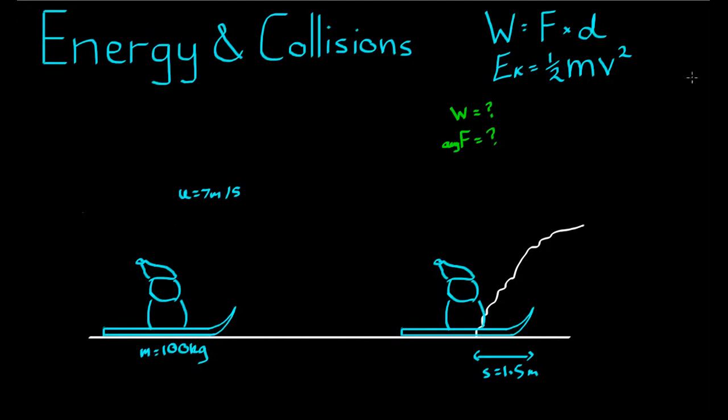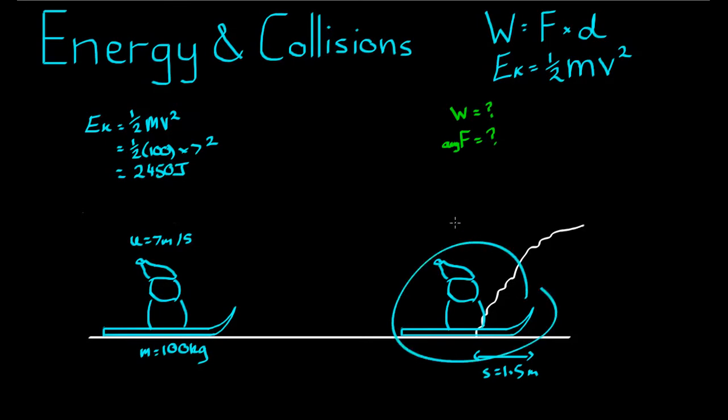First of all, we know that this sledder has some initial kinetic energy. So EK is equal to one half M V squared, which is equal to one half times 100 times 7 squared, which comes to 50 times 49 or 2450 joules. And I'll just make it clear he's come to a complete stop here, so final velocity is zero.